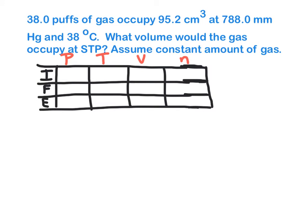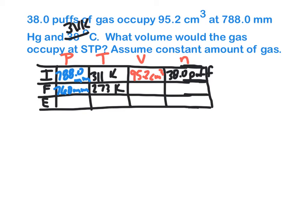Here we have a longer problem. And I'm just going to start by filling this stuff in. Our number of puffs is 38.0 puffs, and that's our number of particles. Our volume is 95.2 centimeters cubed. Our pressure is 788.0 millimeters of mercury. And then our temperature is 38 degrees Celsius, which I'm going to change to Kelvin right away by adding 273 to it. So that's 311 Kelvin. And then it says, what's the volume of the gas at STP, that's standard temperature and pressure. Standard pressure is 760 millimeters of mercury. And standard temperature is 273 Kelvin. So as I go through, I'm going to see how each of these change. Oh, by the way, it's constant particles. So that doesn't bother it at all.